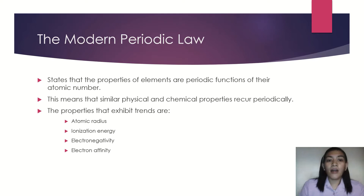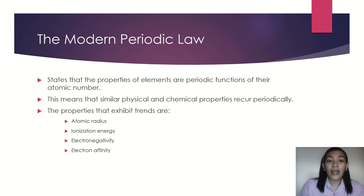The properties that exhibit trends are: 1. atomic radius, 2. ionization energy, 3. electronegativity, and 4. electron affinity. Let's discuss all four of these properties one by one.